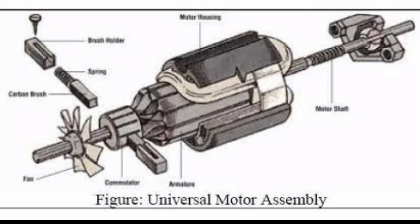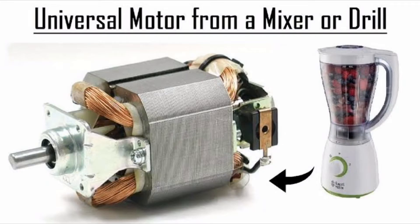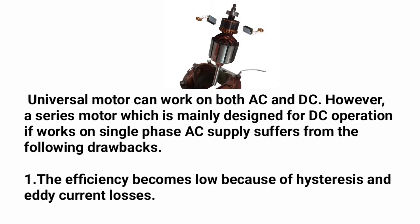The construction of a universal motor includes a commutator, brushes, fan, motor shaft, main field winding, and armature winding — all similar to a DC series motor. It is called a universal motor because it can be applied to both AC and DC supply.